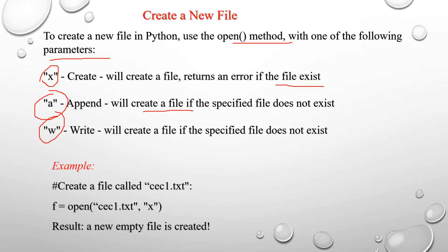For example, to create a file called cec1.txt, specify the file variable f equal to open, with file name cec1.txt and mode 'x'. The use of mode 'x' is that it will create the file and return an error if the file already exists. The result is a new empty file is created.